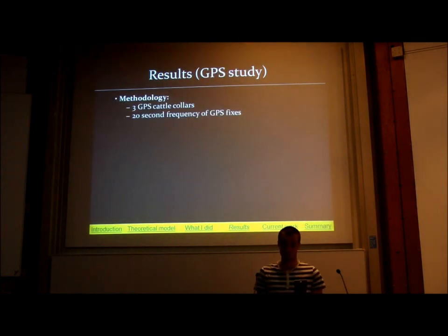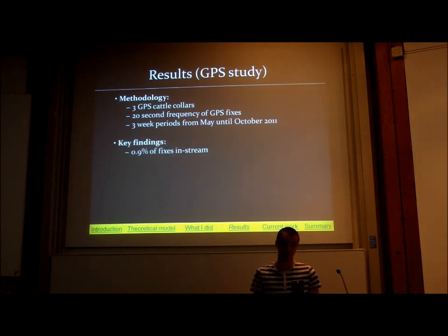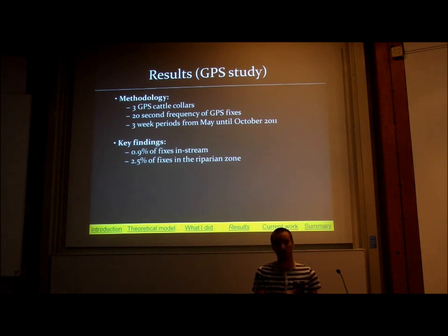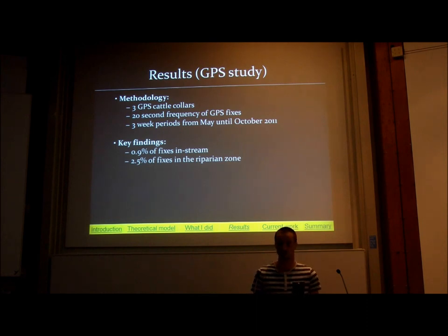The GPS study used cattle collars recording location every 20 seconds. Key findings were that cattle in this study spent 0.9% of their time in-stream and 2.5% of their time in the riparian zone. The discrepancy between this and the observational study is down to differences in observation duration — the GPS data was 24-hour, whereas the observational study covered eight hours during the middle of the day. When you account for that, the two figures do match up and the GPS study and observational study agree.